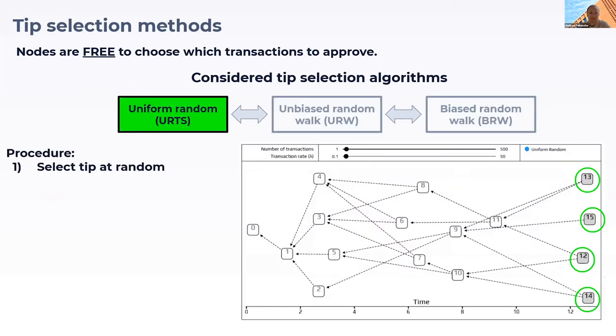The uniform random tip selection is where a node just selects one of the unapproved transactions or tips at random.